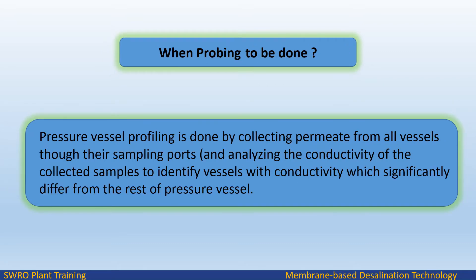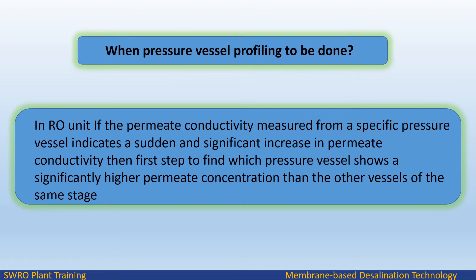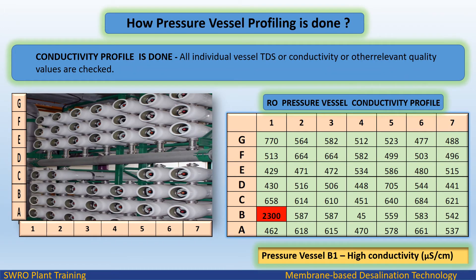When should probing and profiling be done? Pressure vessel profiling should be performed when the permeate conductivity measured from a specific pressure vessel indicates a sudden and significant increase. The first step is to find which pressure vessel shows a significantly higher permeate concentration than the other vessels of the same stage.